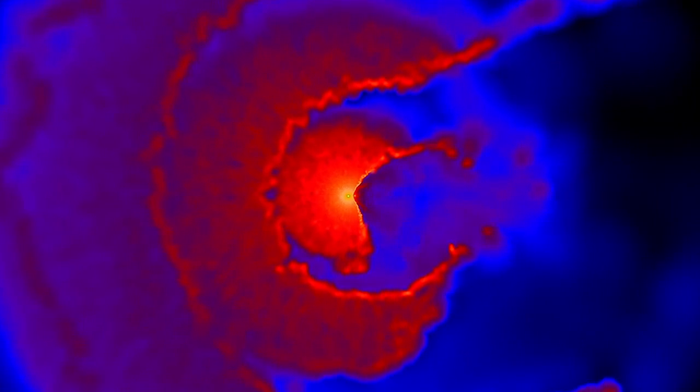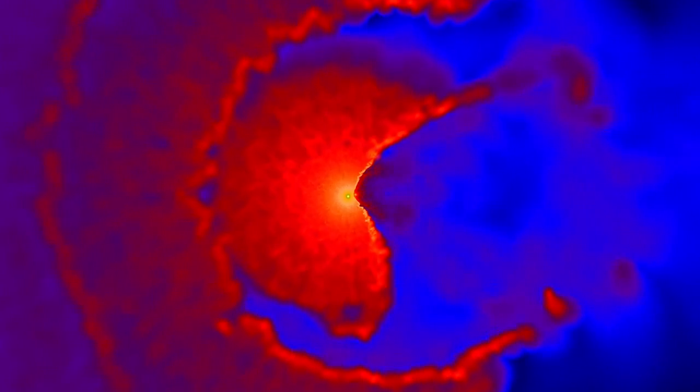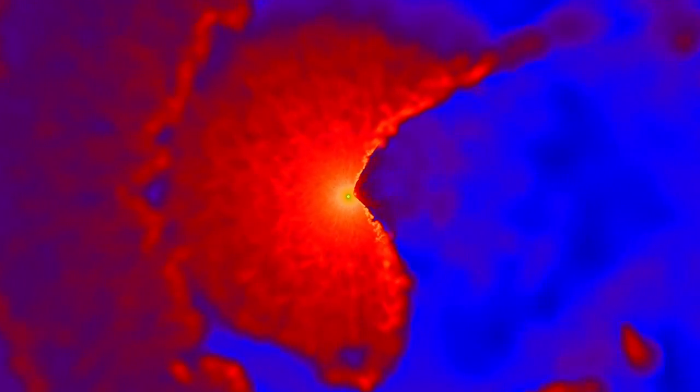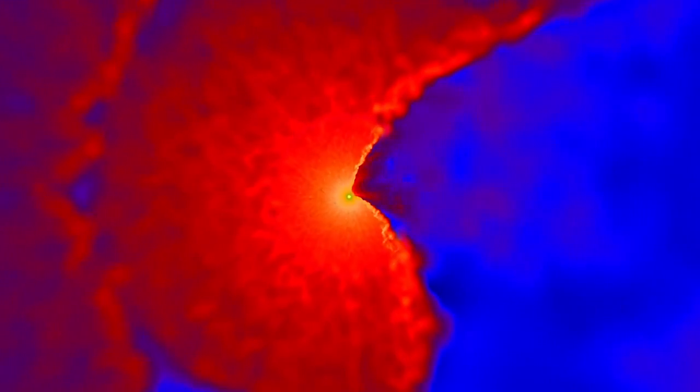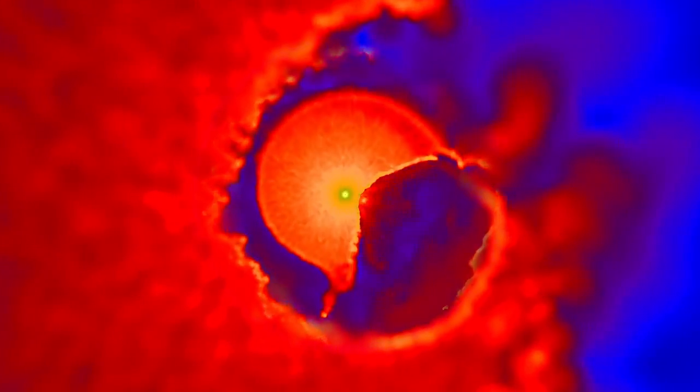Recent observations have helped theorists refine computer models of this interaction. Here, darker colors indicate lower gas densities around the stars, while the stars themselves appear as black circles. When the stars are far apart, the winds collide head-on, creating a huge cavity surrounded by 50 million degree gas.